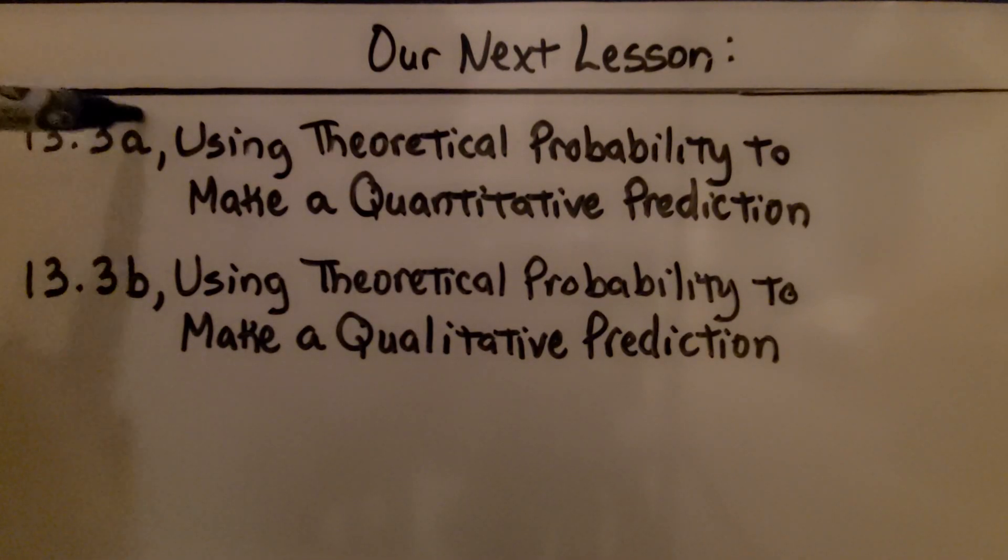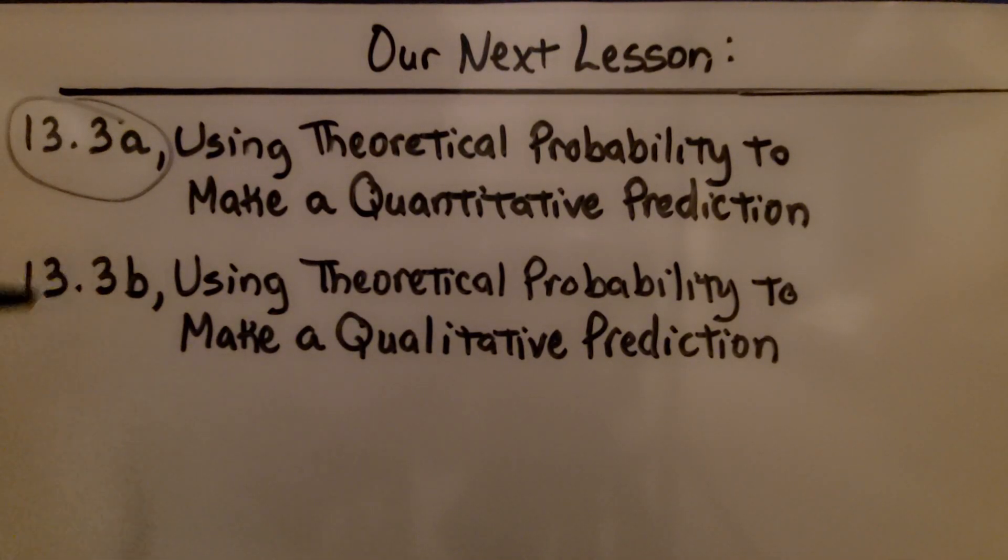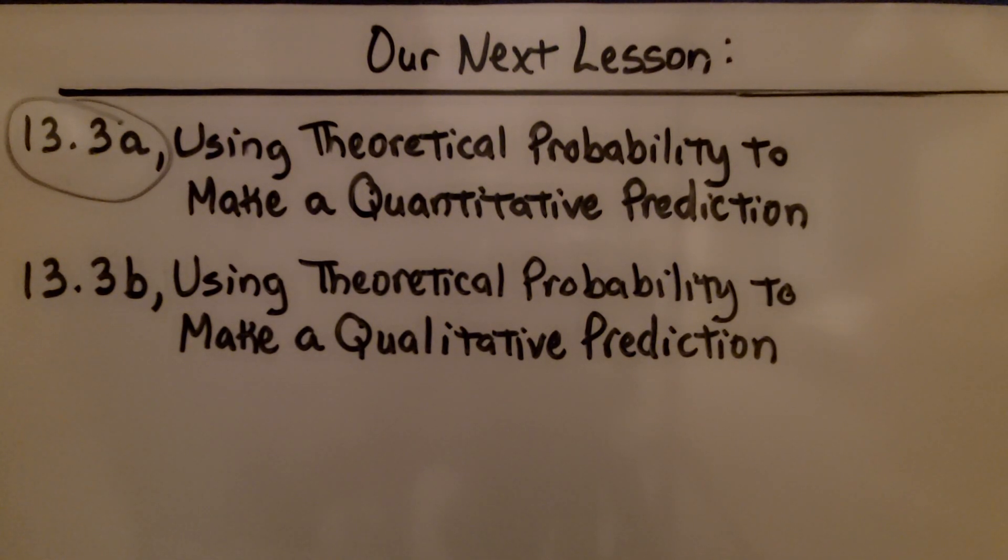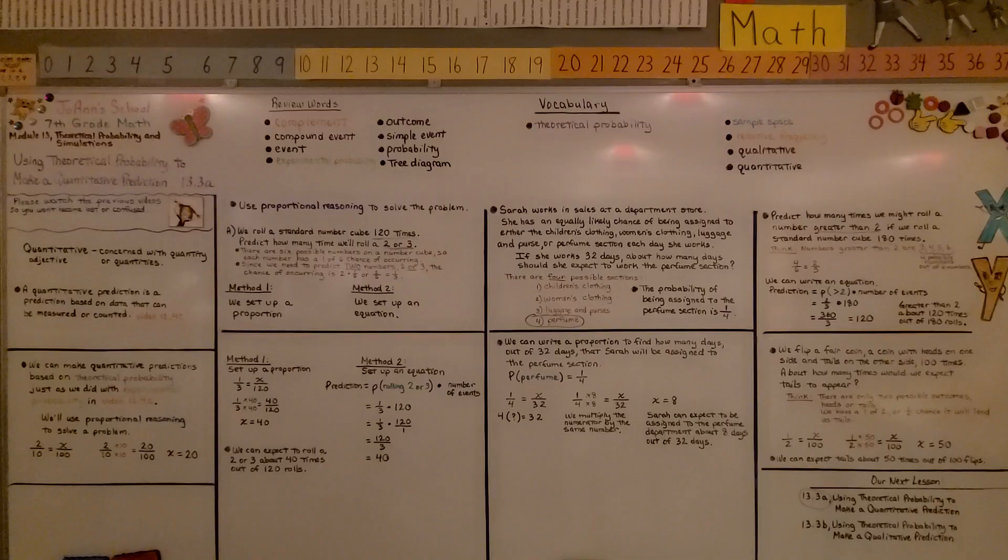We finished the first part of the lesson. We're going to move on to the second part of the lesson, using theoretical probability to make a qualitative prediction. We only have a few more videos, and we'll be finished with 7th grade math. If you've watched all of them, I'm very proud of you. Please join me for the second part of the lesson, and have a great day. Bye.